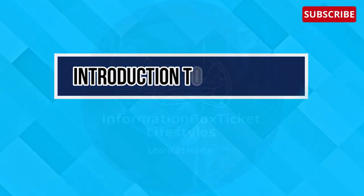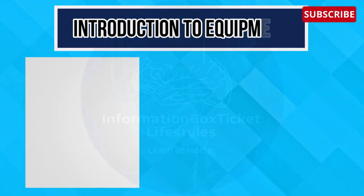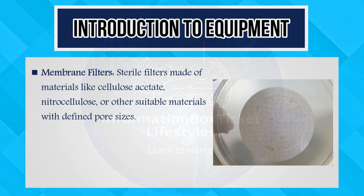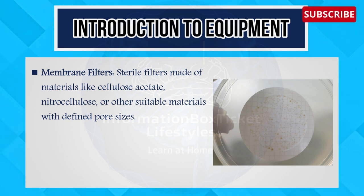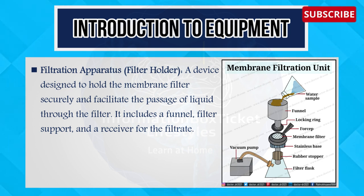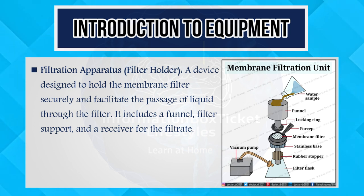Next, introduction to equipment. First, we will have the membrane filters — sterile filters made of materials like cellulose acetate, nitrocellulose, or other suitable materials with defined pore sizes. Second, filtration apparatus — a filter holder, a device designed to hold the membrane filters securely and facilitate the passage of liquid through the filter.